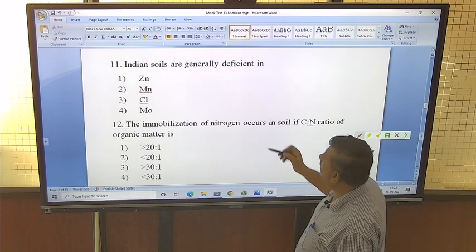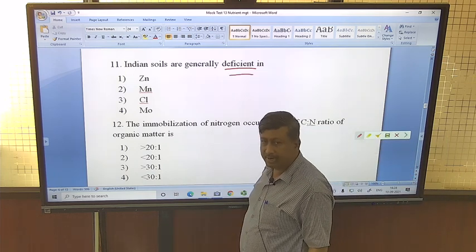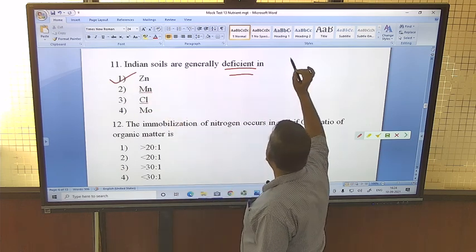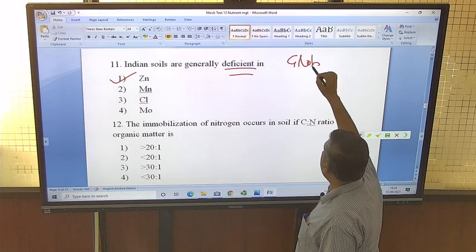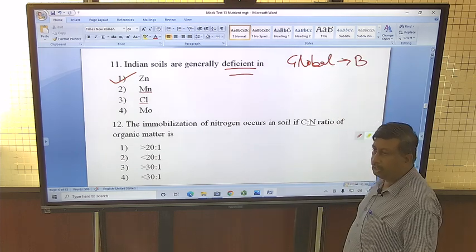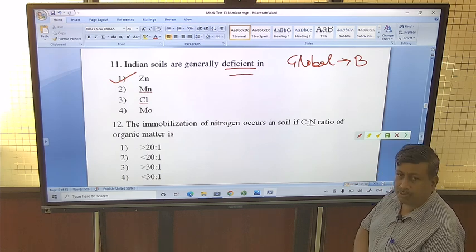Indian soils are generally deficient in - this is a very common question asked in many examinations. This is zinc. And if we talk about global, boron is the most deficient micronutrient. But in India, zinc is the most deficient micronutrient.